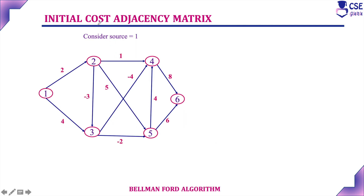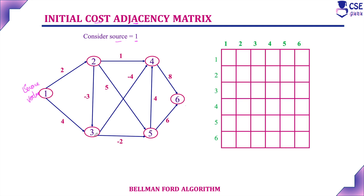The first step is to find the initial cost adjacency matrix. The source vertex is 1, and from this source vertex to all other vertices we need to find the shortest path. We enter the distance from one vertex to another vertex as given in the graph, considering the direction as well.